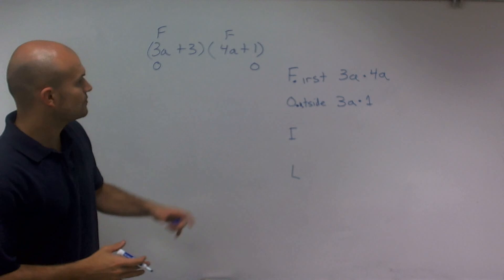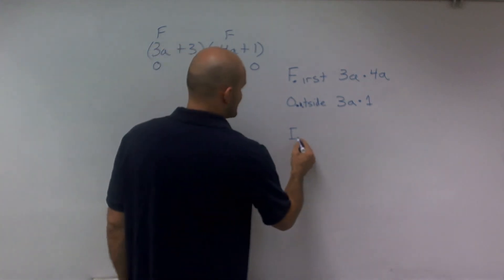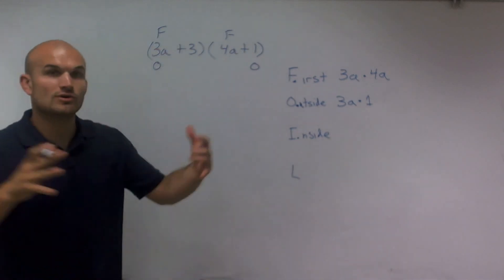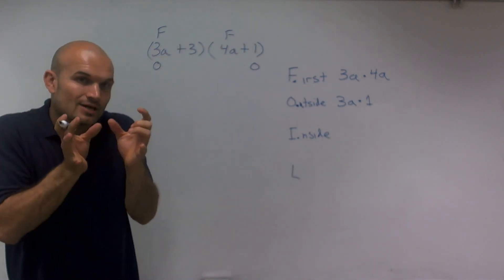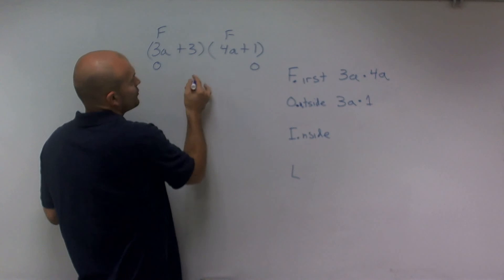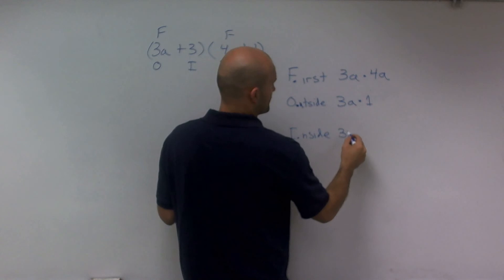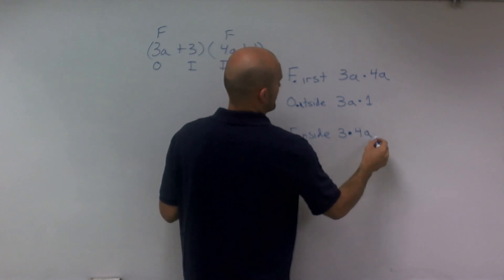Now, the next one is going to be the inner, or I'm just going to call it the inside. So if the two are the outer, then the two inner, or the inside, are going to be 3 and 4a. So I'm going to multiply those two, 3 times 4a.